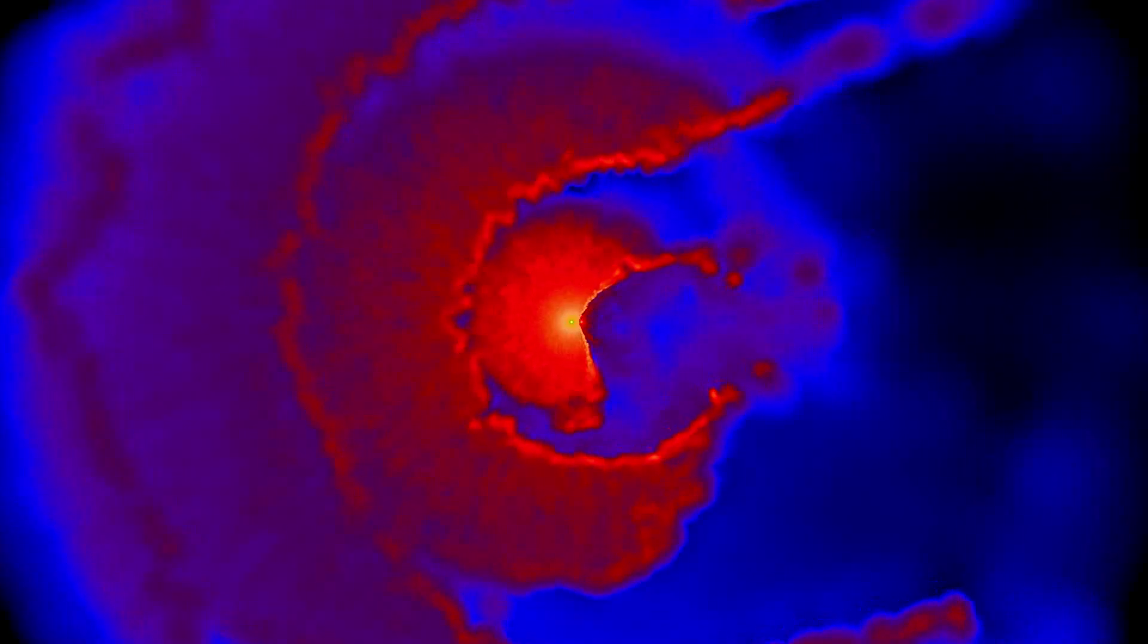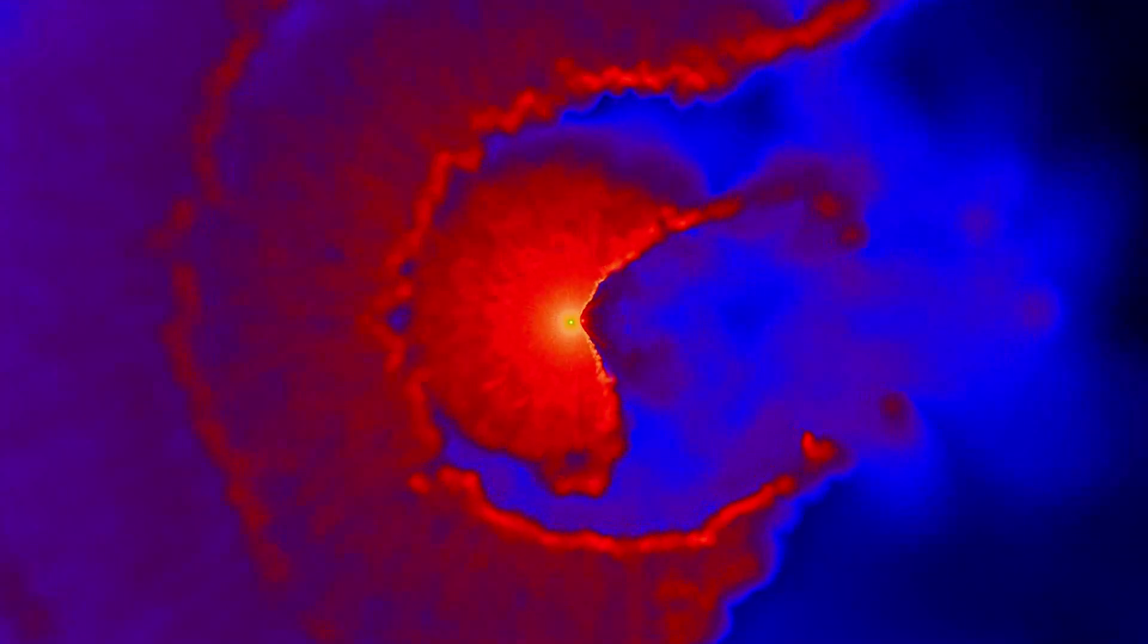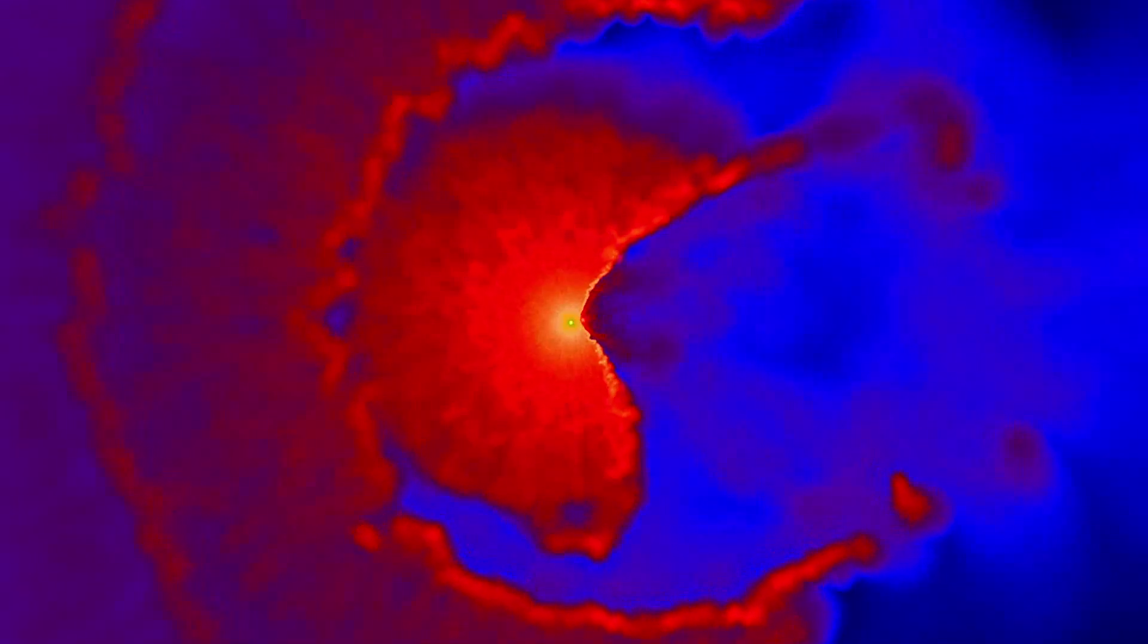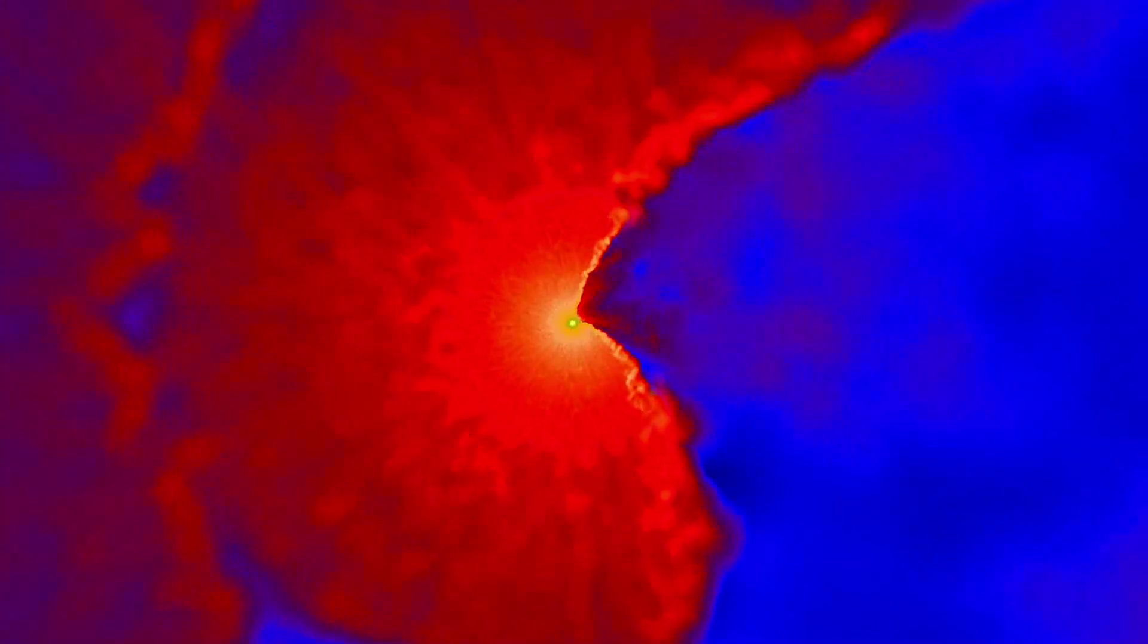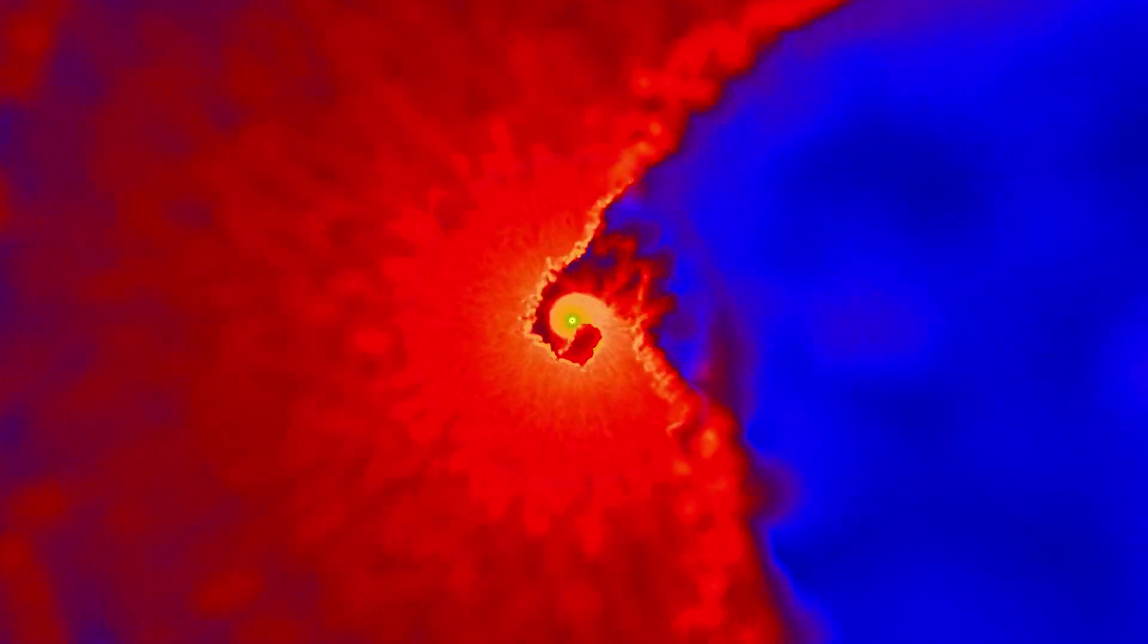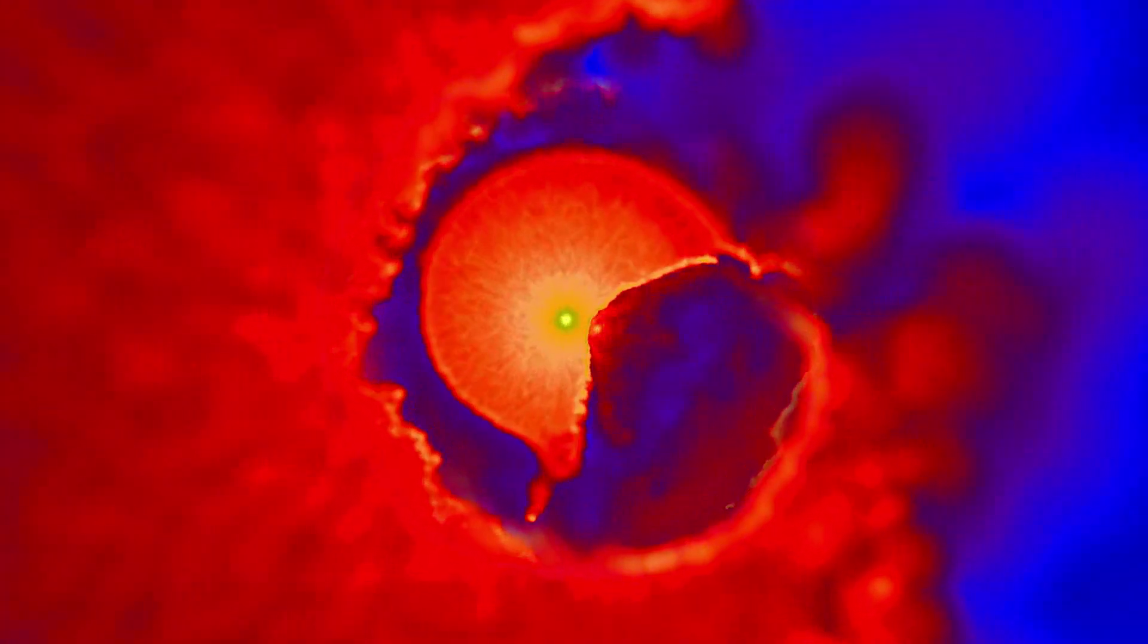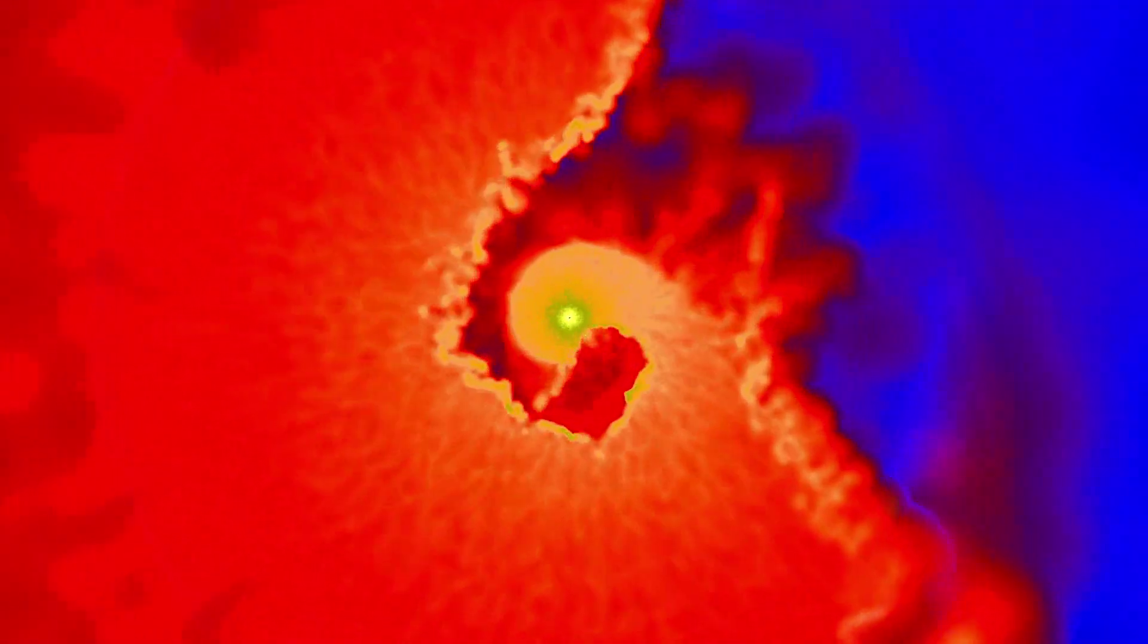Recent observations have helped theorists refine computer models of this interaction. Here, darker colors indicate lower gas densities around the stars, while the stars themselves appear as black circles. When the stars are far apart, the winds collide head-on, creating a huge cavity surrounded by 50 million degree gas.